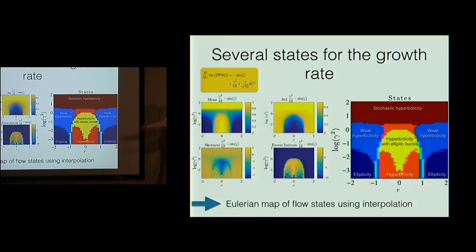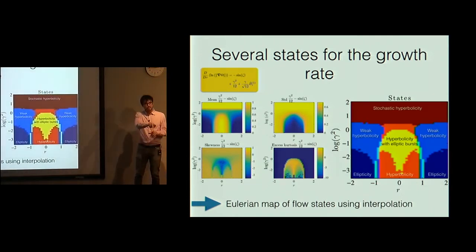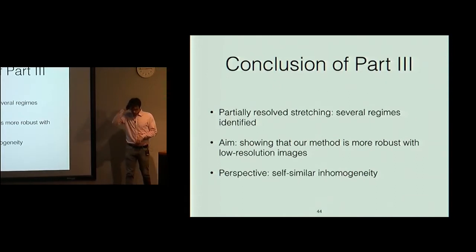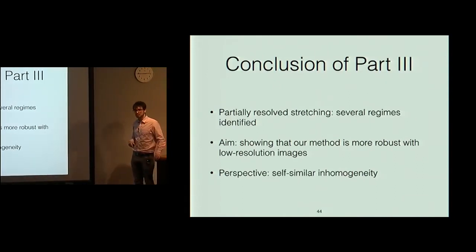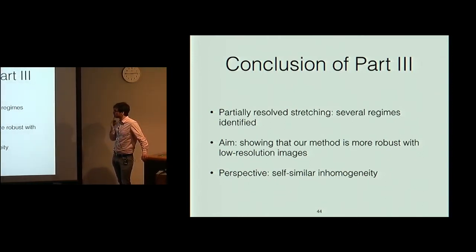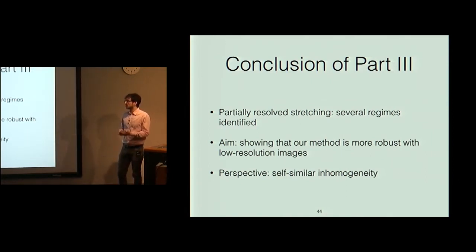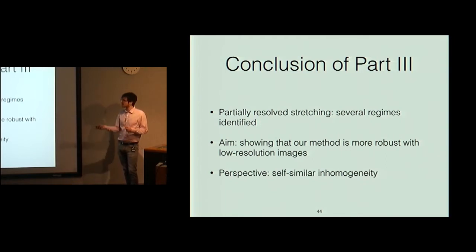With these different regimes as a function of r and gamma, we can take an altimetric field, compute r and gamma, and classify each point as stochastically hyperbolic, elliptic, etc. This work is ongoing and not yet in the manuscript. We still have to make improvements: we want to show this method is more robust than the Okubo-Weiss criterion at lower resolution like altimetric measurements, and we need to add inhomogeneity in the small-scale dynamics with a self-similar assumption for better results.